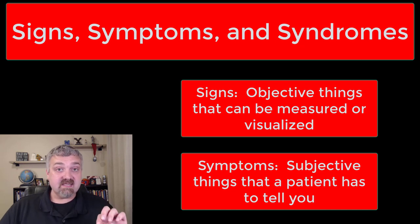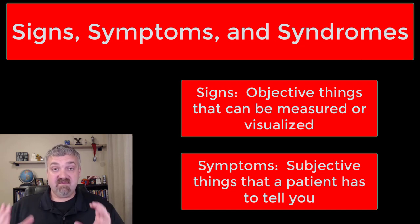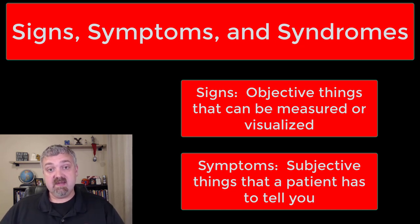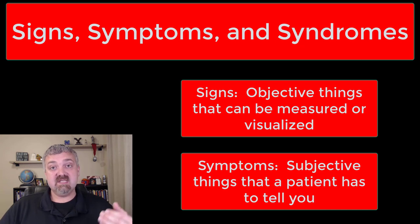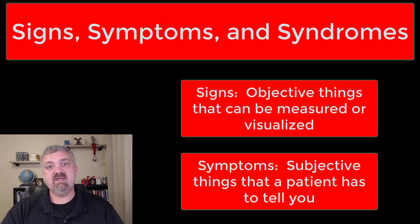So that is signs versus symptoms. Think signs: objective, can be visualized, can be measured. Symptoms: subjective — the patient has to explain them to you, which is why the patient history is so important.